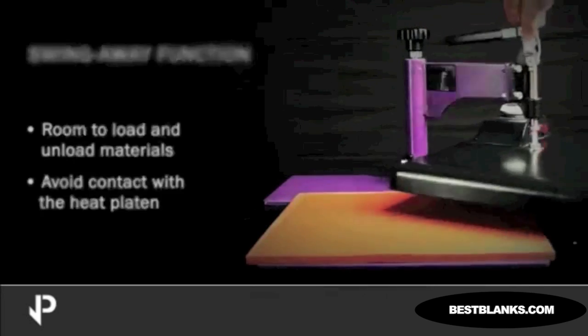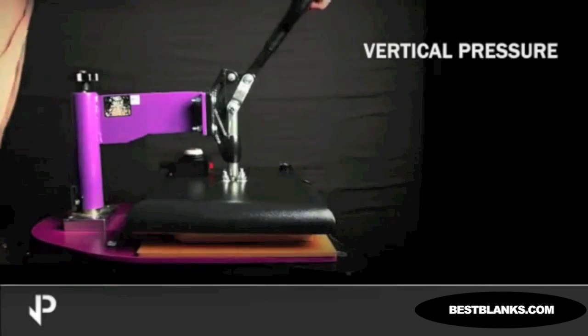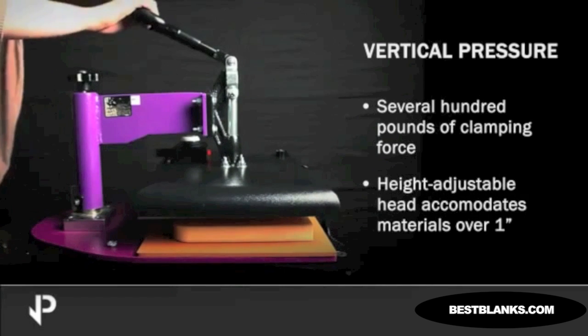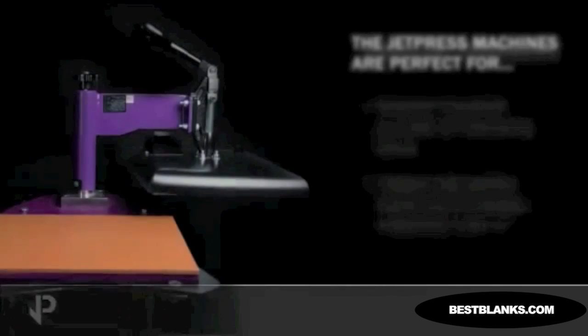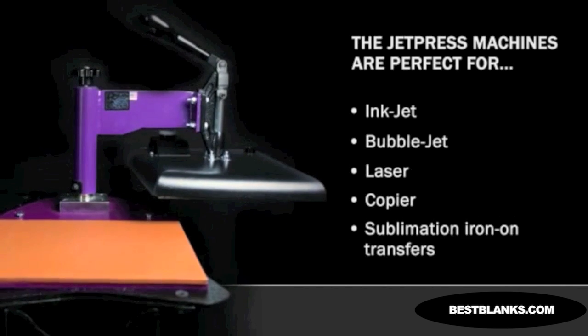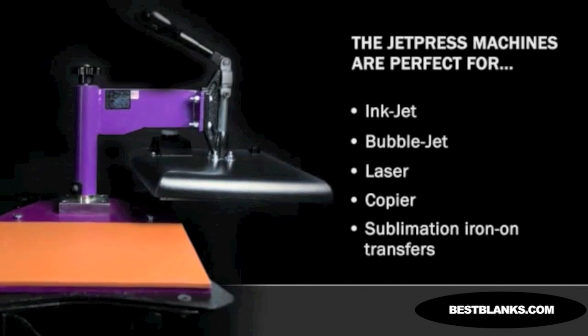The vertical pressing action provides several hundred pounds of clamping force with little operator effort, and the height-adjustable head accommodates materials over one inch thick. The JetPress machines are perfect for inkjet, bubblejet, laser, copier, and sublimation iron-on transfers for users seeking professional-quality imprinting results.